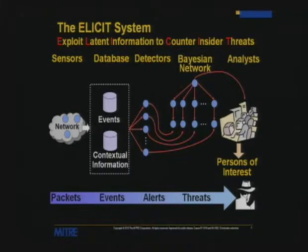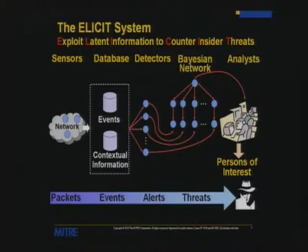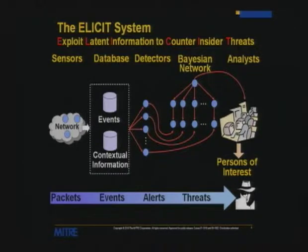Even with alerts, if you're monitoring a large enterprise you have too many alerts to look through everything — anyone who's seen Snort output for a large network knows this. You really need an analyst with an ability to prioritize. We used a Bayesian inference network to produce a probability between zero and one that you have a malicious insider given the alerts seen. That probability gets fed into a user interface where an analyst works from threat scores down to alerts and events.